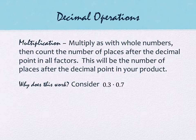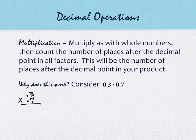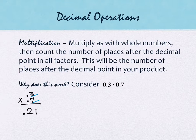Let's do it and then explain why it works. With 0.3 times 0.7, they don't need to be lined up the same way. Multiply ignoring the decimals: 3 times 7 is 21. Count the decimal places — each has one, so there are two total. Your answer has two numbers after the decimal point: 0.21, which is 21 hundredths. That's the algorithm. But you'll have students who ask 'why?'